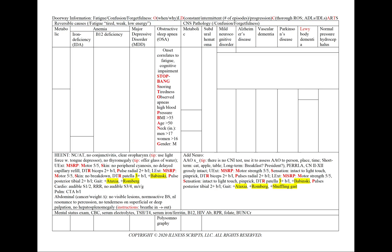Obstructive sleep apnea can also be one of our reversible causes. The onset here typically correlates to fatigue or the cognitive impairment, confusion, or forgetfulness. With STOP-BANG, we'll see snoring, daytime tiredness, observed periods of apnea, high blood pressure, a BMI greater than 35, an age typically greater than 50, an increased or enlarged neck girth, and a gender that's male. We'll add a polysomnography.